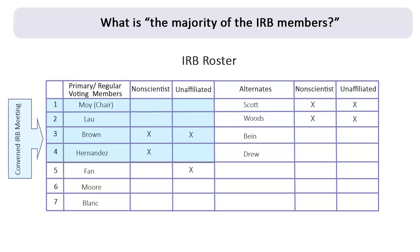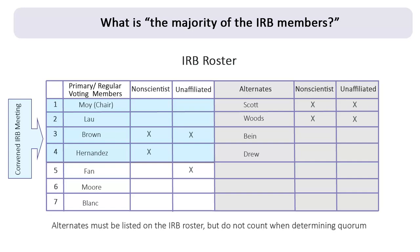The term primary member is used to distinguish them from individuals who are designated as alternates, a concept that we will explain in a moment. For now, it is sufficient to know that any alternates must be listed on the IRB roster, but they do not count when determining how many members are needed to constitute a quorum.